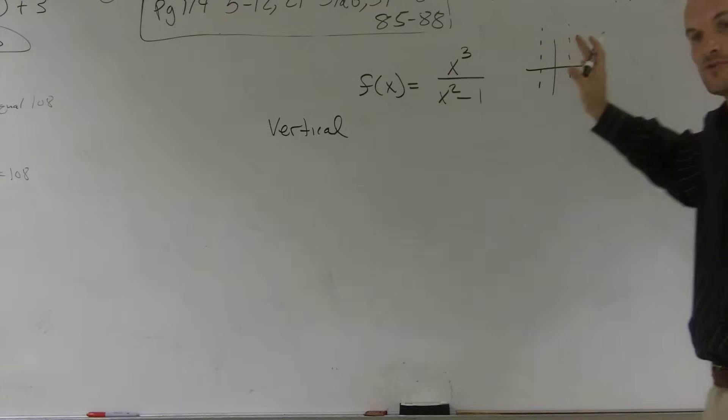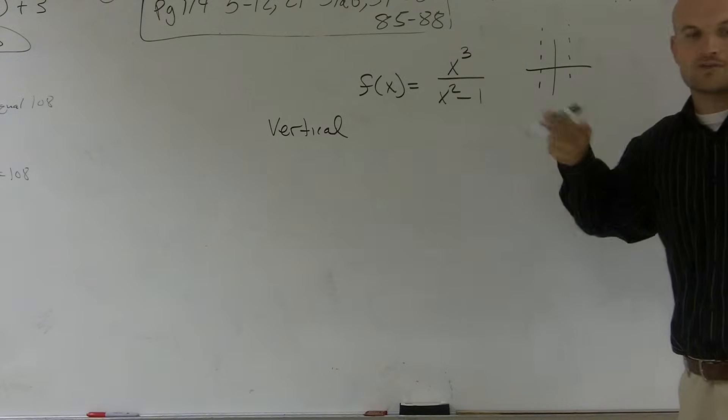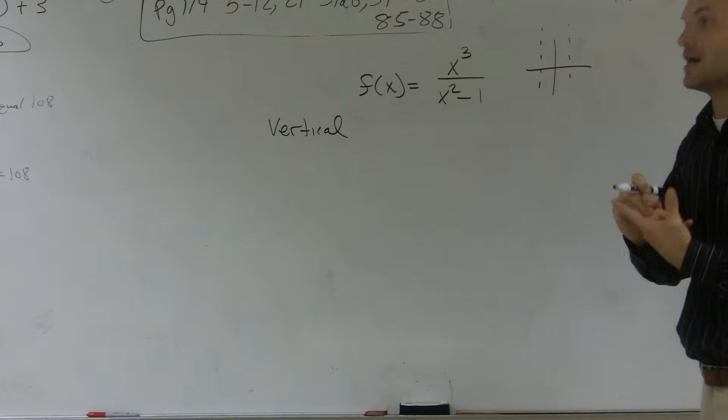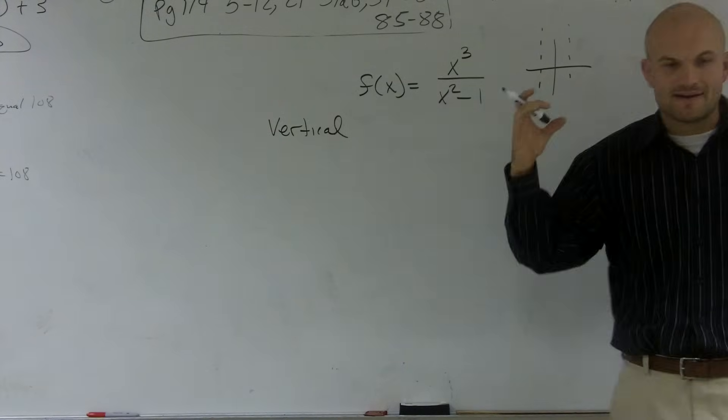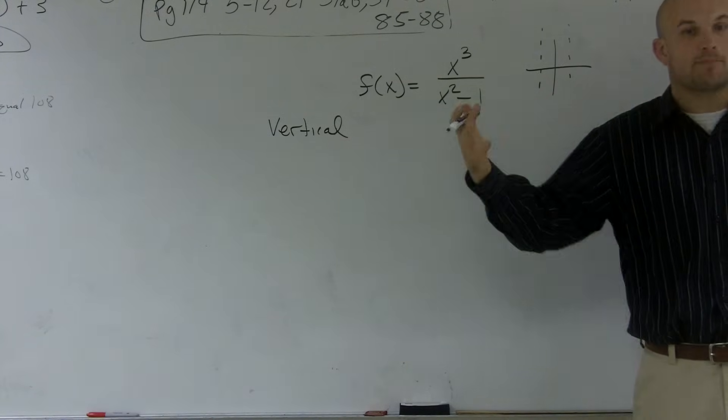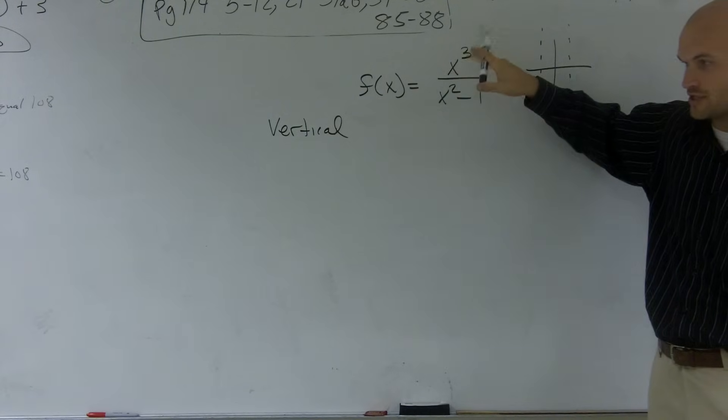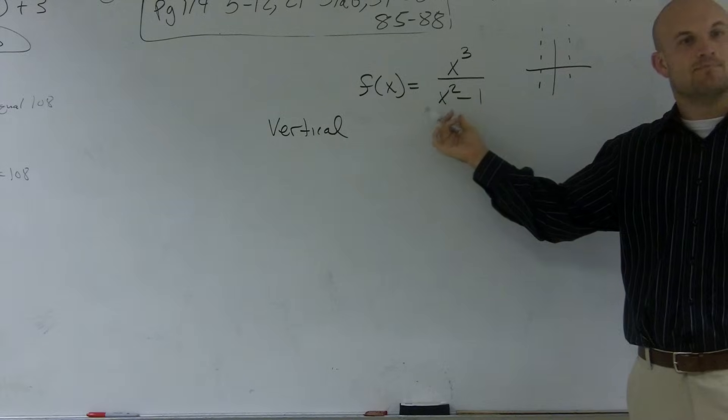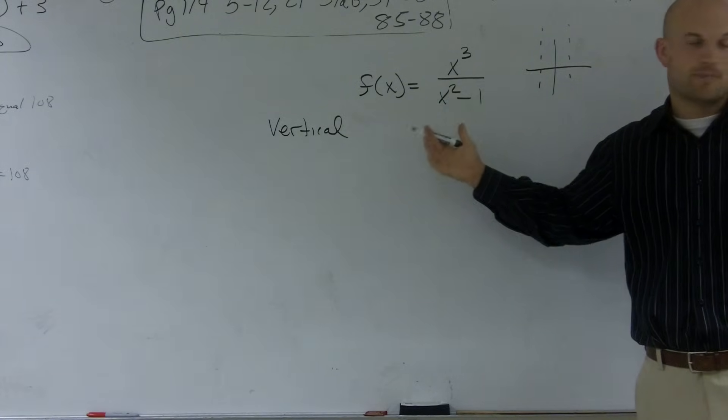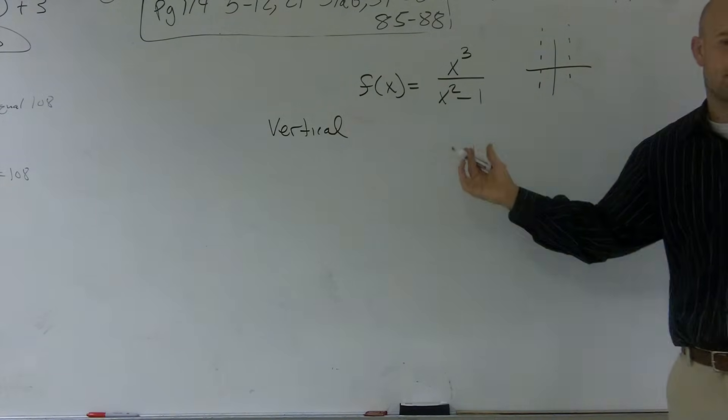So we're going to have x values that our graph are going to approach, but they're never going to touch or ever going to cross. So therefore, we have to find certain x values that are not a part of our function. So when you're dealing with a rational function, we know that if we find values that make the bottom 0, those cannot be a part of our function because you cannot divide by 0.